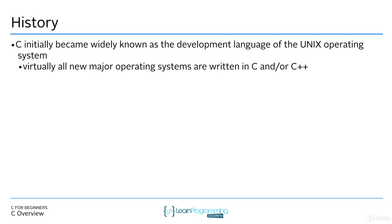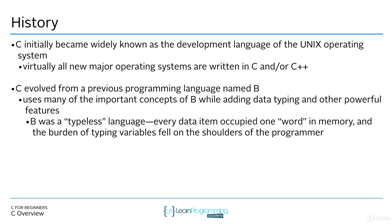C initially became widely known as the development language of the Unix operating system, and virtually all new operating systems written after 1972 are written in C or C++. It evolved from a previous programming language named B — that's why it's named C. It uses many of the important concepts of B while adding data typing and other powerful features. B had the issue of being typeless, meaning data didn't have types, and C improved upon that.